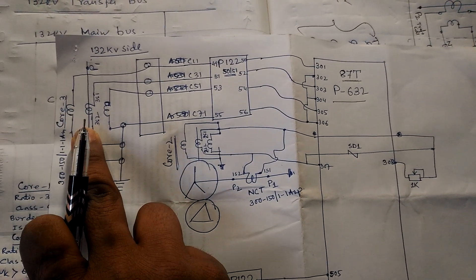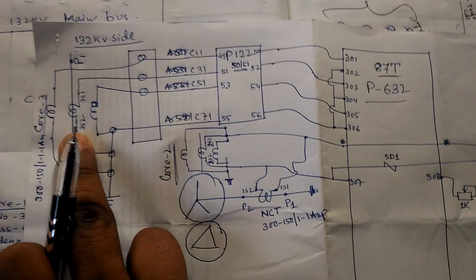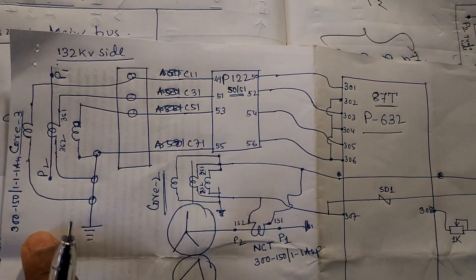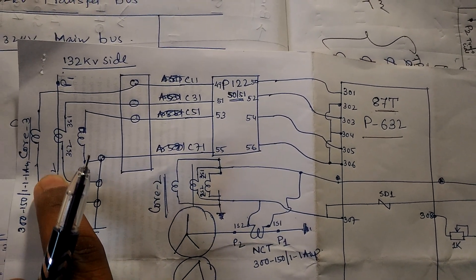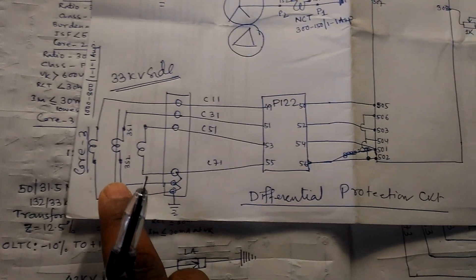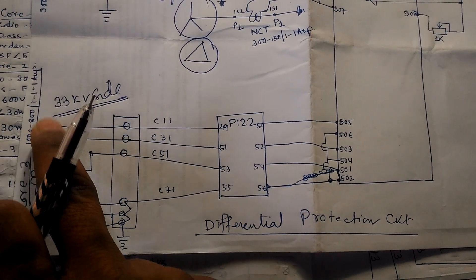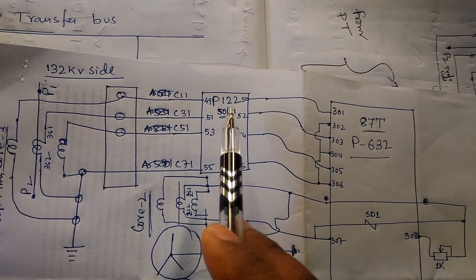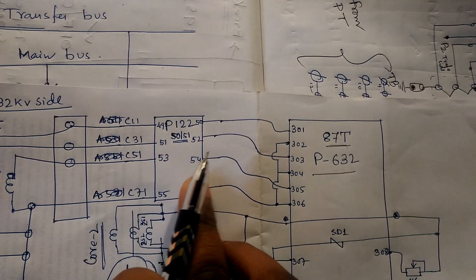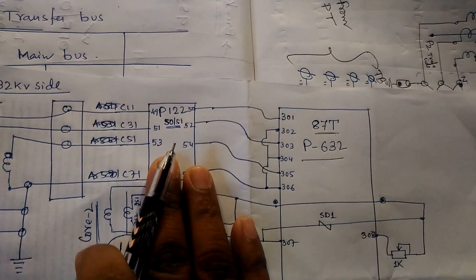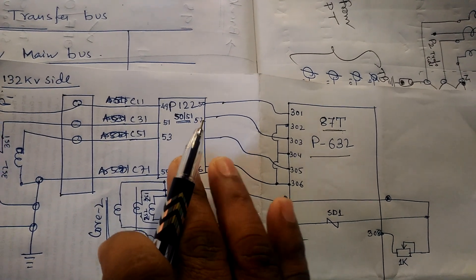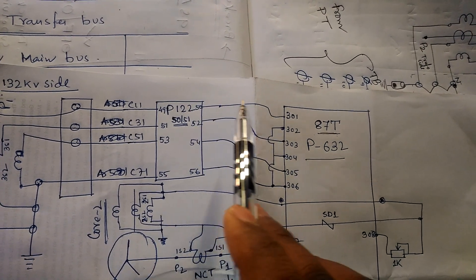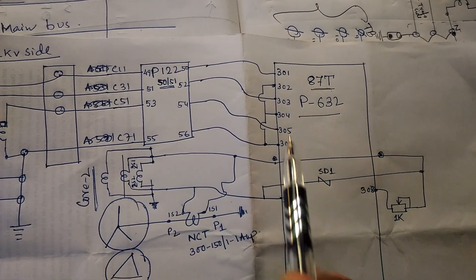The third core of the CT is used for differential protection on both the 132 kV side and the 33 kV side. On the 132 kV side, the CT ratio is 300/150/1A, and on the 33 kV side, the CT ratio is 1800/1A. From the CT terminal we connect the P122 Micom relay, which is the overcurrent and earth fault relay (50/51 and 50N/51N).